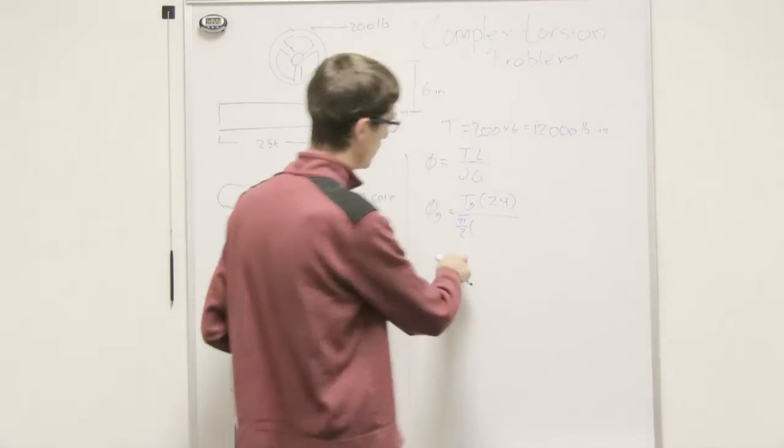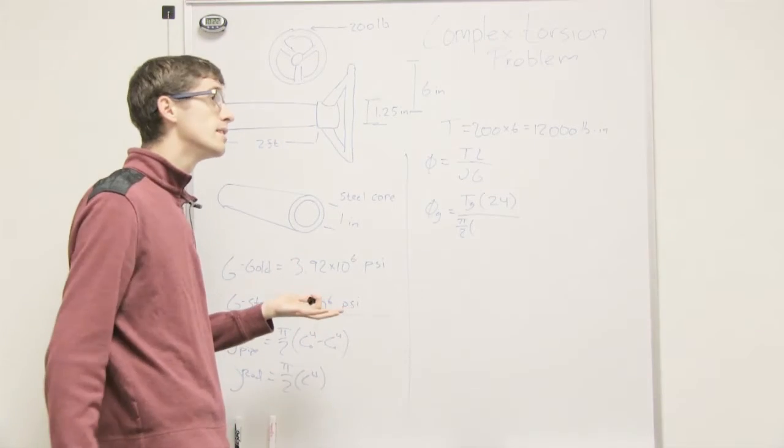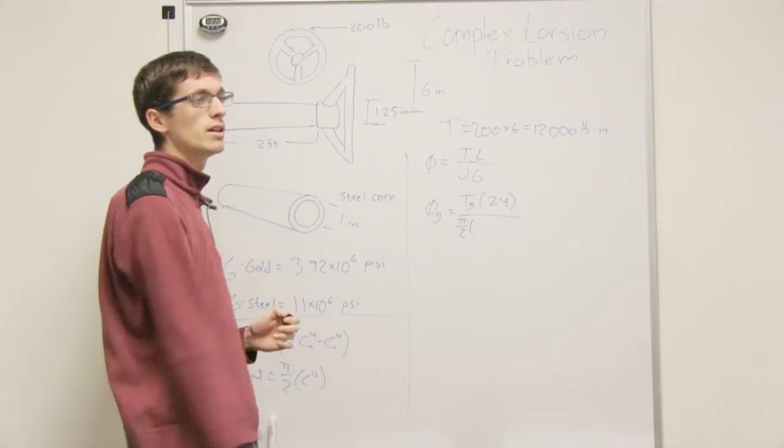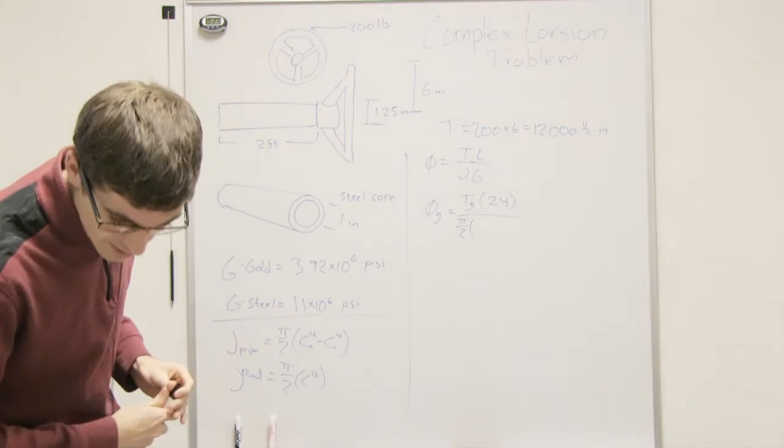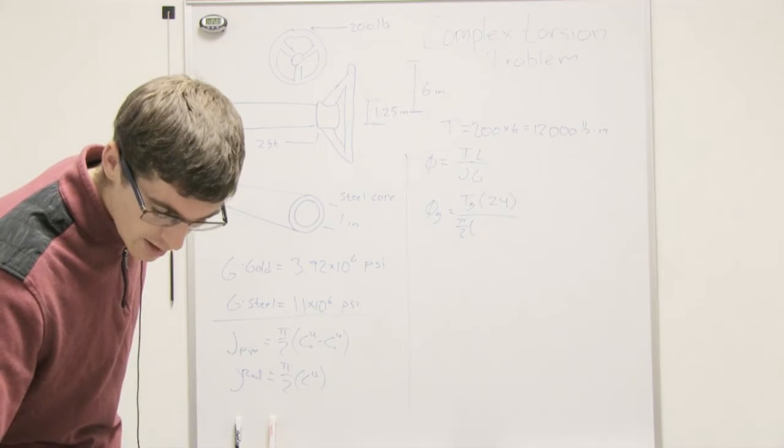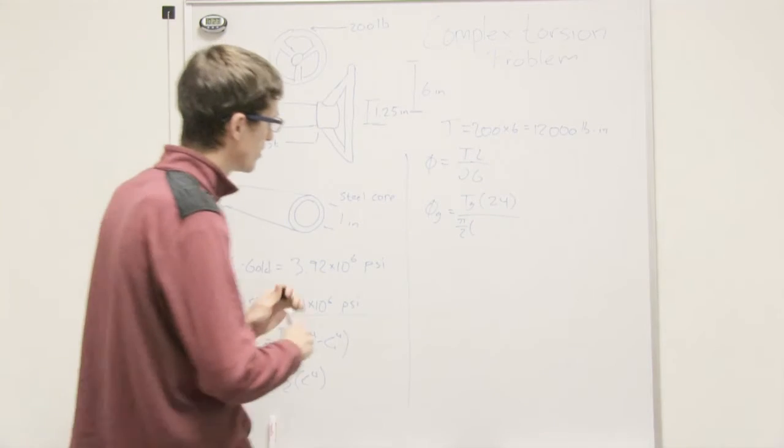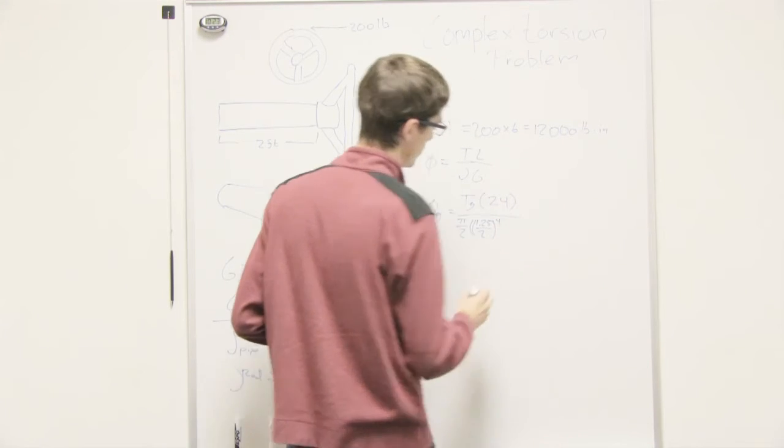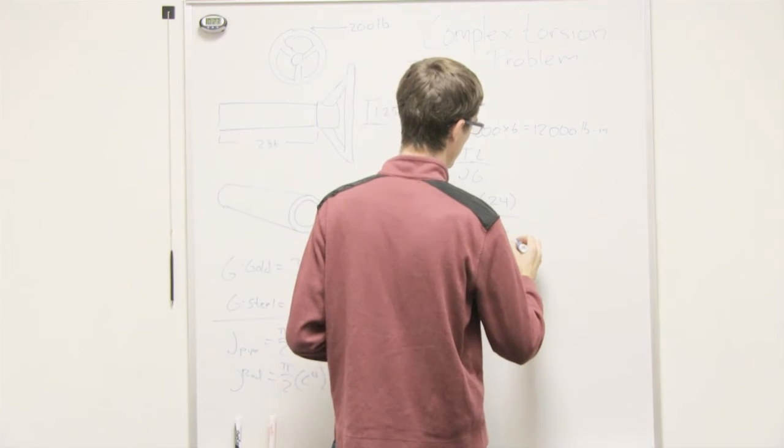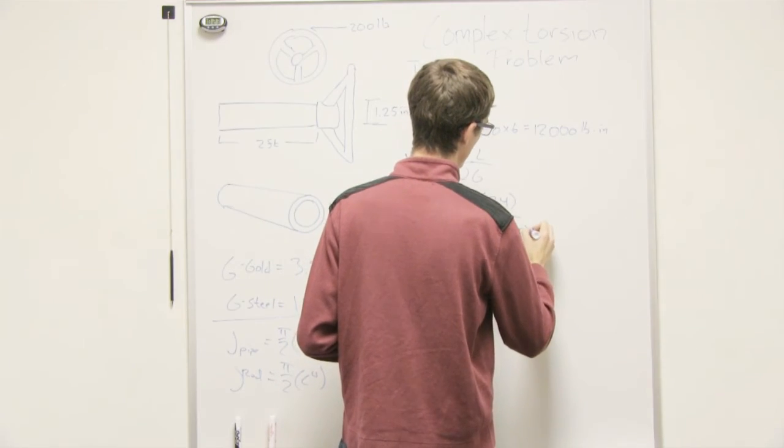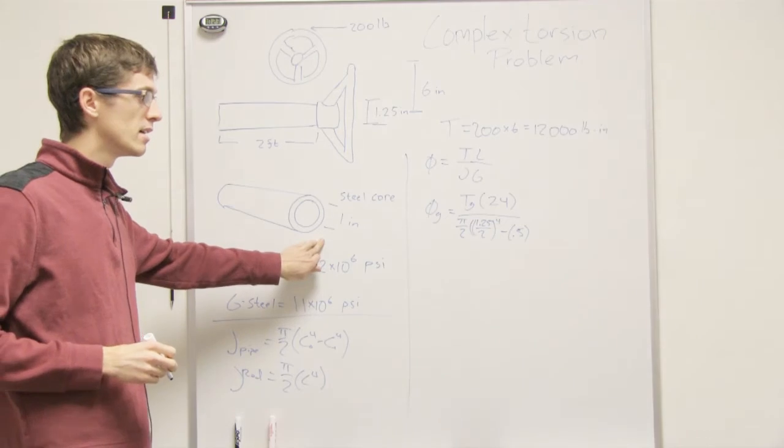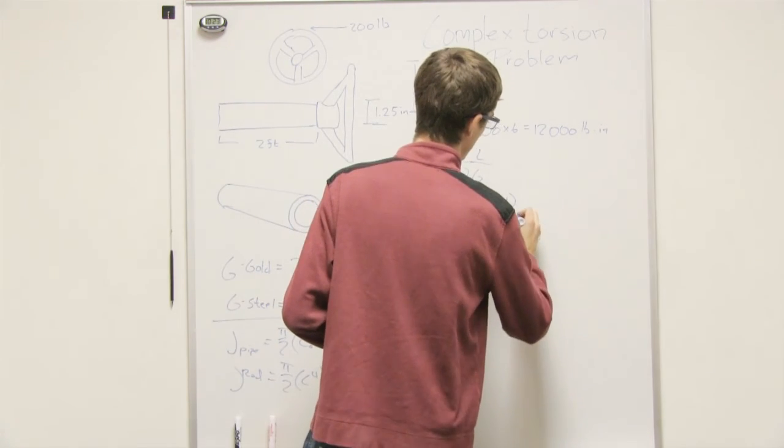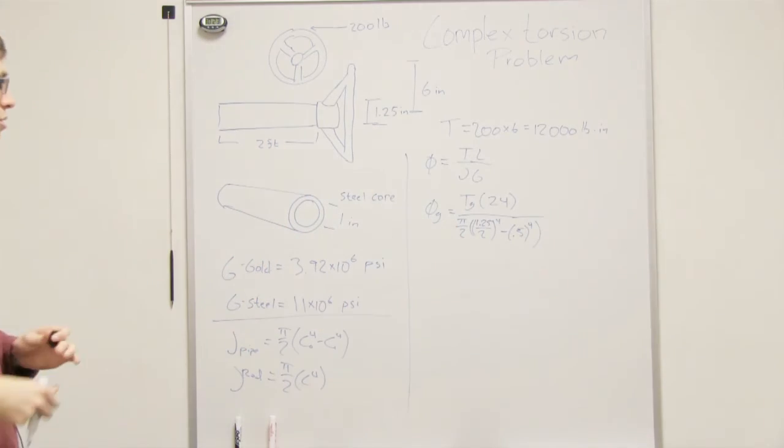Alright, so for this, we have pi over two over the outer radius to the fourth, the outer radius is half of 1.25. I don't have a calculator with me, so I'm just going to write it down like this. 1.25 over two, that to the fourth. So half of 1.25 to the fourth, minus half of one inch, because that's the inner diameter.